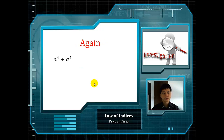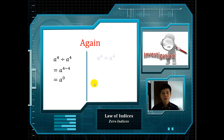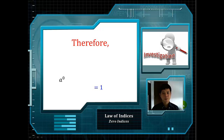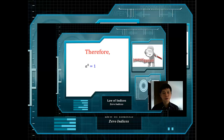We will look at another example. 8 to the power of 4 divided by 8 to the power of 4. Using the law of indices, we will have 8 to the power of 4 minus 4, and hence 8 to the power of 0. Similarly, using direct calculation, we will cancel out the common terms and we have the answer 1. Therefore, 8 to the power of 0 equals to 1.